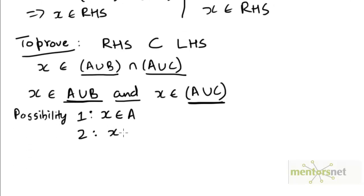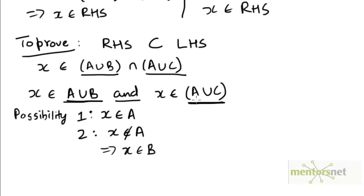The other possibility is that x does not belong to A. If x does not belong to A, how could x belong to both A union B and A union C? If x does not belong to A, it could belong to A union B only if x belongs to B, because if it doesn't belong to A, it must belong to B in order to be part of the union. Similarly, if x does not belong to A, then x must belong to B and C as well.